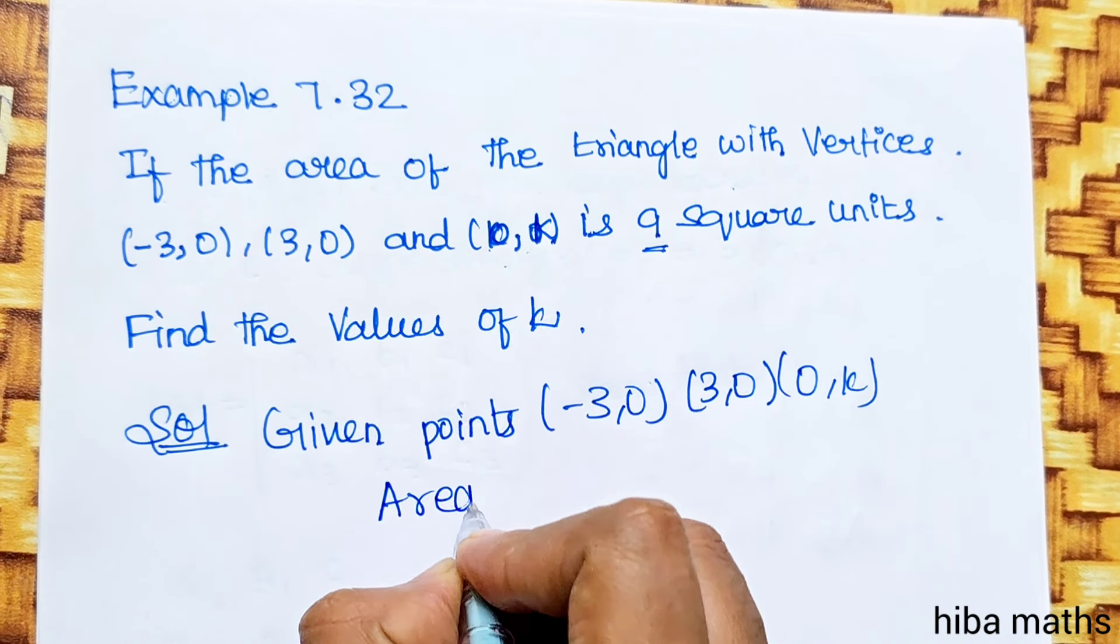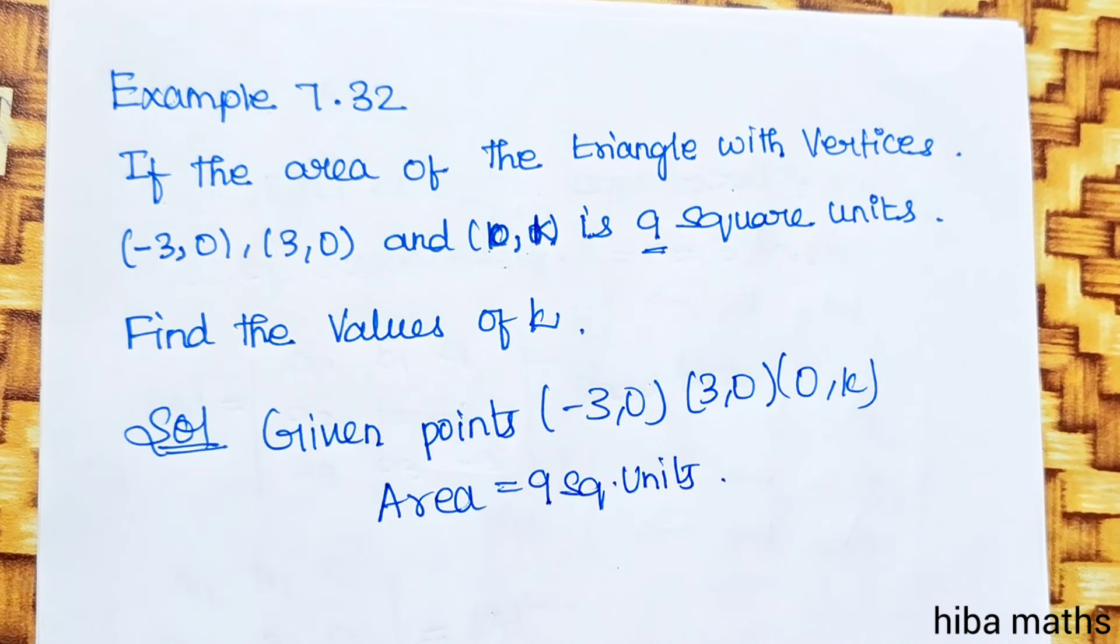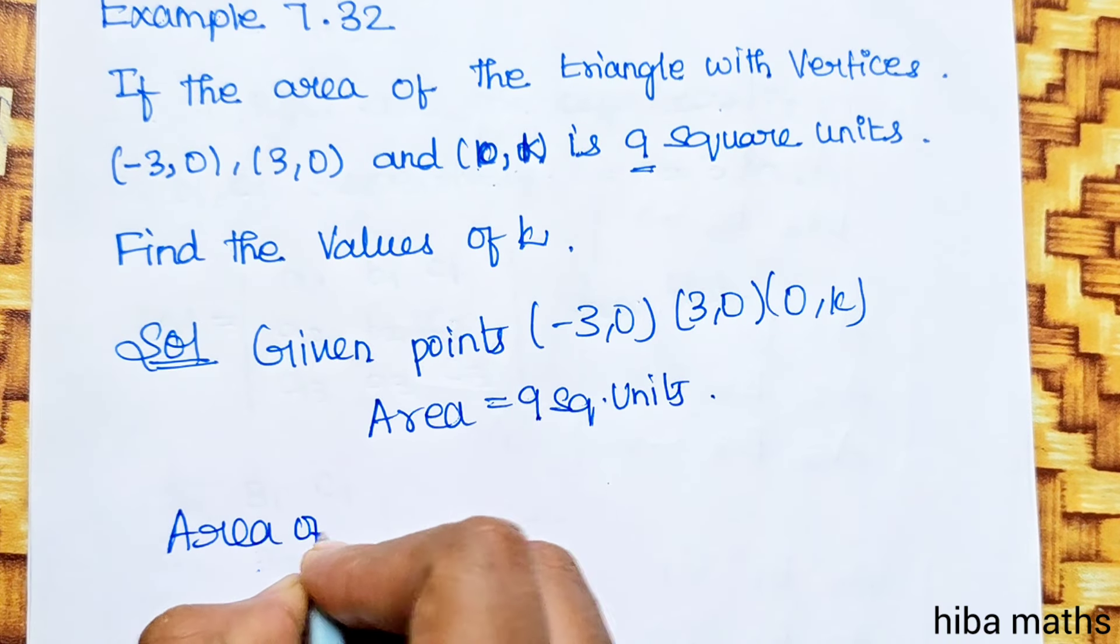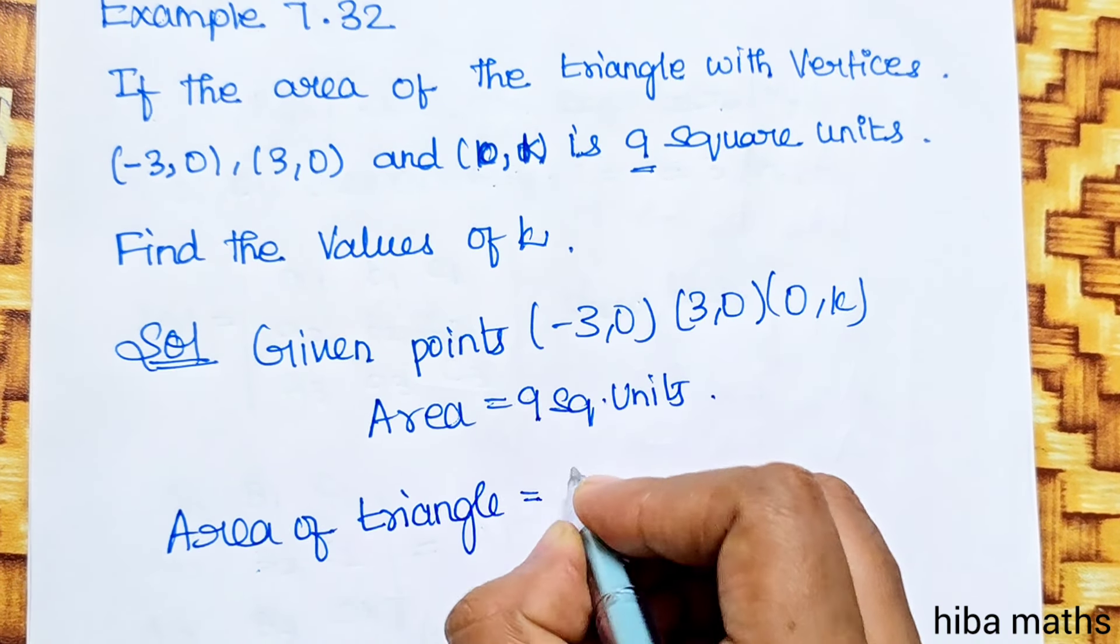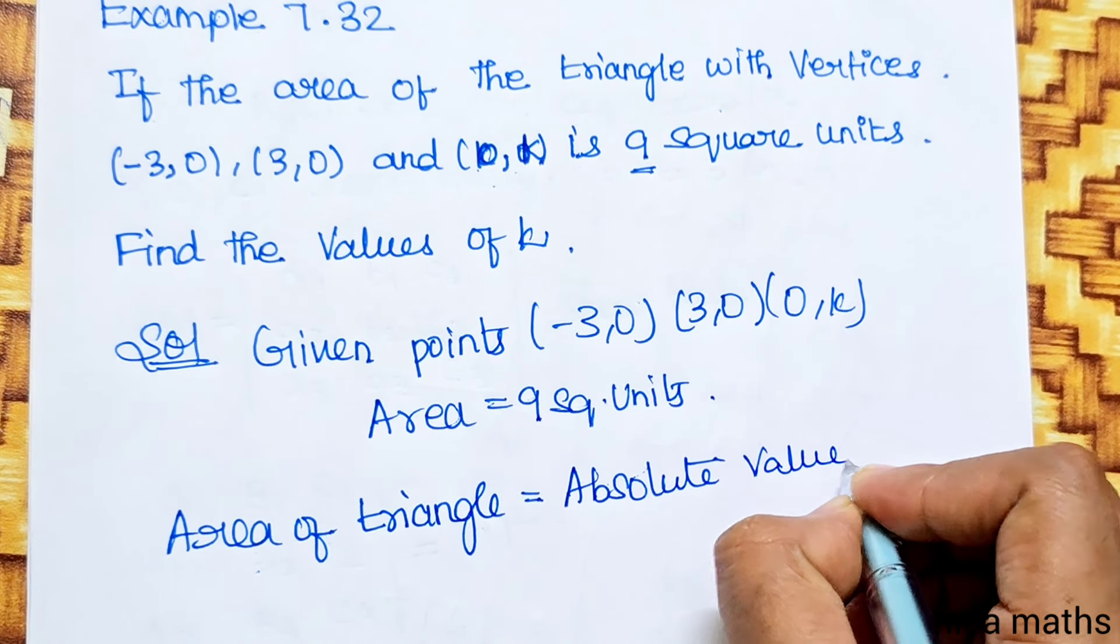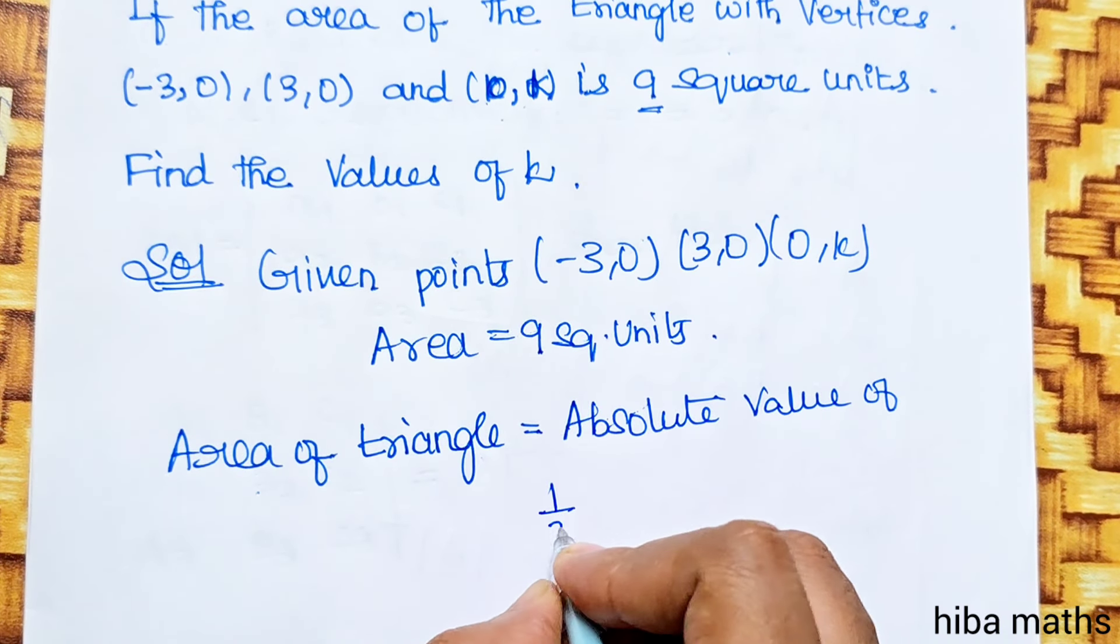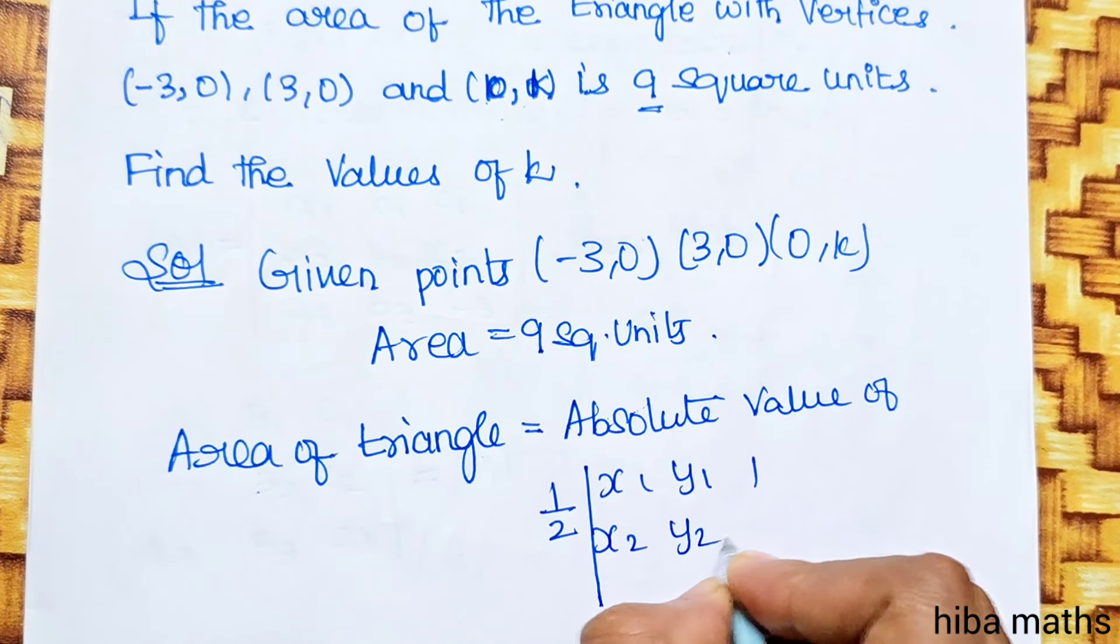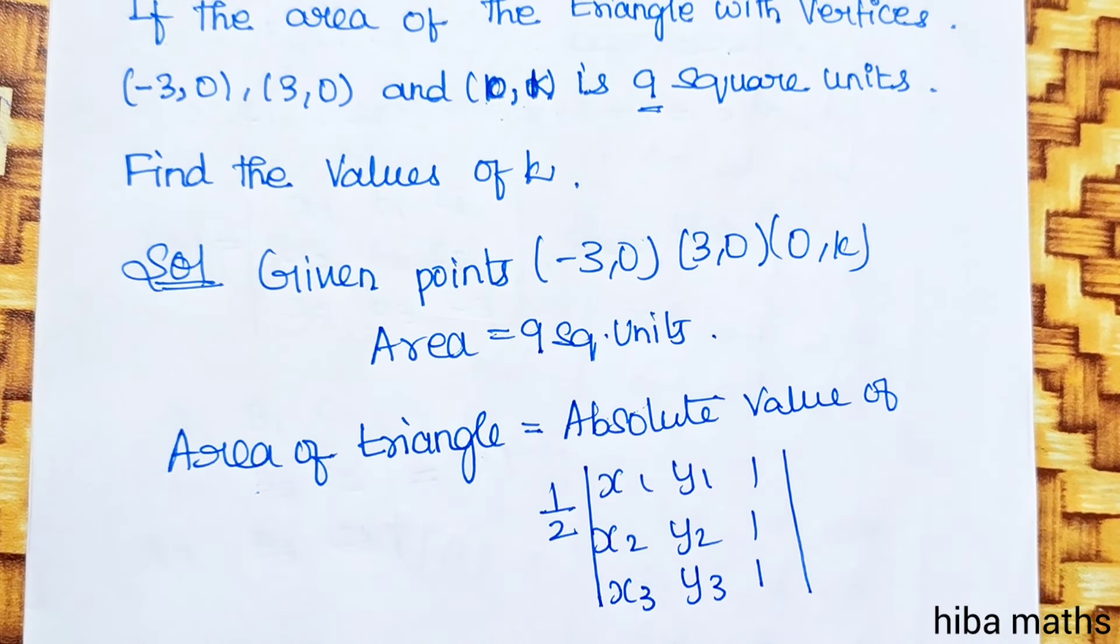In the solution, the given points are (-3,0), (3,0), and (0,k). The area is 9 square units. The formula for area of triangle is the absolute value, modulus equals 1/2 times x1 y1 1, x2 y2 1, x3 y3 1.